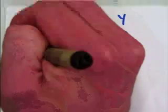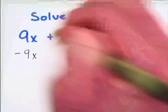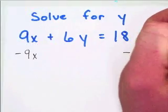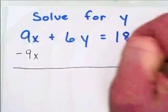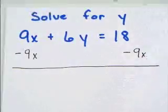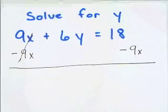So in order to do that, we're going to subtract 9x from both sides. And after we subtract 9x from both sides, 9x and minus 9x reduce to zero. So they're gone. I'm left with 6y.